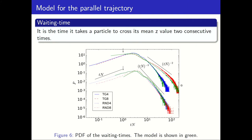Another way to study these waves is by computing the probability density function of the waiting times. The waiting time is the time it takes a particle to cross its mean altitude two consecutive times — we can think of it as half a wave period. The simulations (in blue and red) and the model (in green) are in good agreement. Importantly, the PDFs of the waiting time are not exponential, meaning that particles have memory and waves carry information from their initial conditions for a finite amount of time.